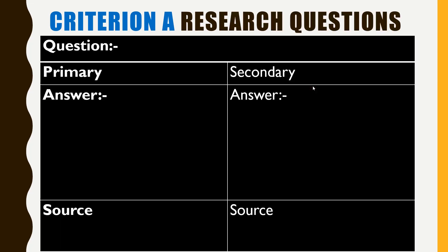Here's a simple template you might want to use: place your original research question at the top, then include the primary and secondary sources of data you've collected with your answers, giving a brief overview of what you found in each, and then list your sources.